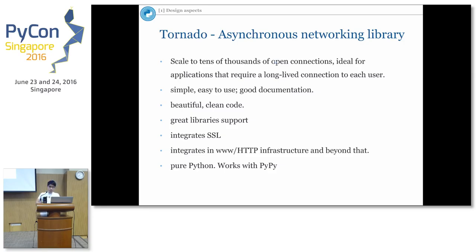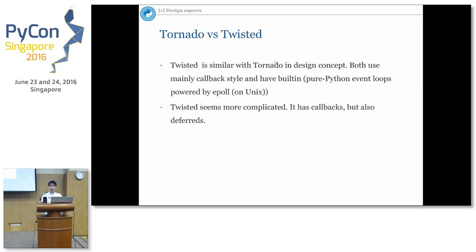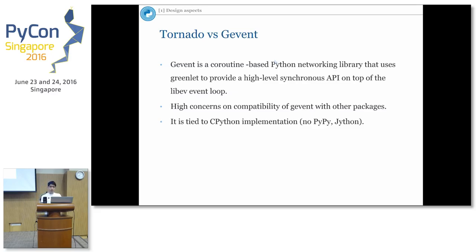But why is Tornado better than other options? Compared with Twisted — also a very good candidate and very similar to Tornado — both use callback style and have a built-in pure Python event loop powered by epoll on Unix. The problem is Twisted seems much more complicated. It offers not only callbacks but also Deferred, which is like GoTo in C — you have a lot of problems with programming and testing, and when other programmers read the code, it's very hard to understand.